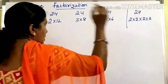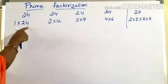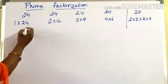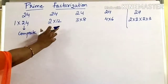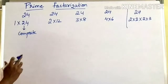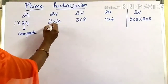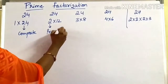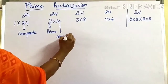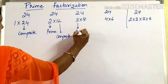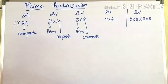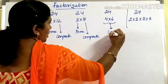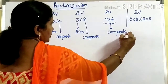Now, if you consider 24 written as 1 into 24, one factor is composite — this number 24 is composite. When you consider 2 into 12 or 3 into 8, one factor is prime and the other is a composite number. In 4 into 6, both 4 and 6 are composite numbers.